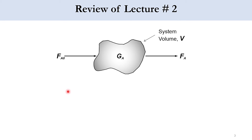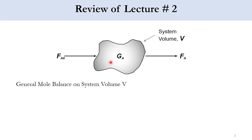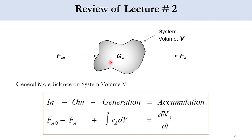As a recap of lecture two: for a system volume V where the inlet flow rate is FA0, the outlet flow rate is FA, and the generation is GA, we write the mole balance as: in minus out plus generation equals accumulation, which gives FA0 minus FA plus the integral of rA dV equals dNA over dt.